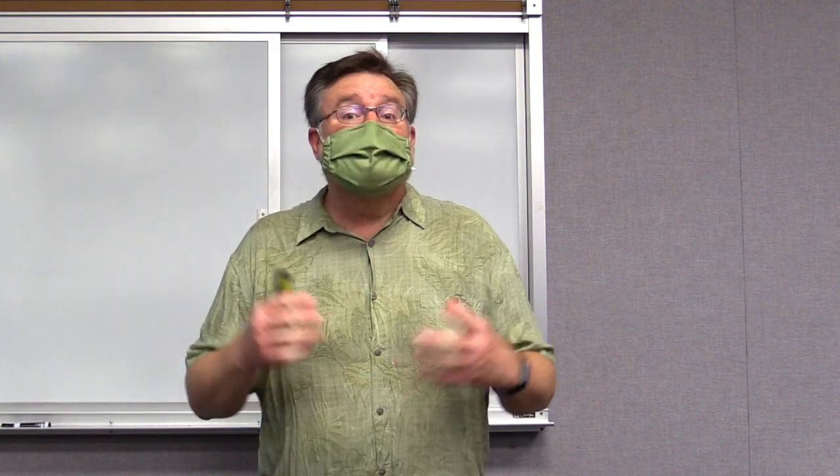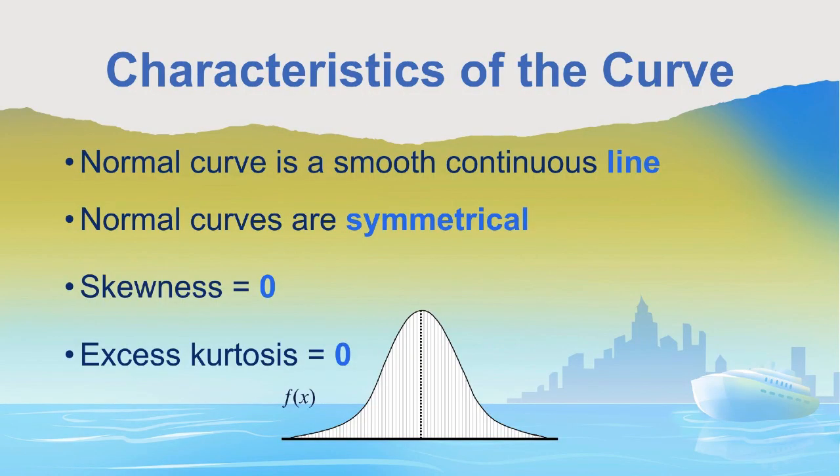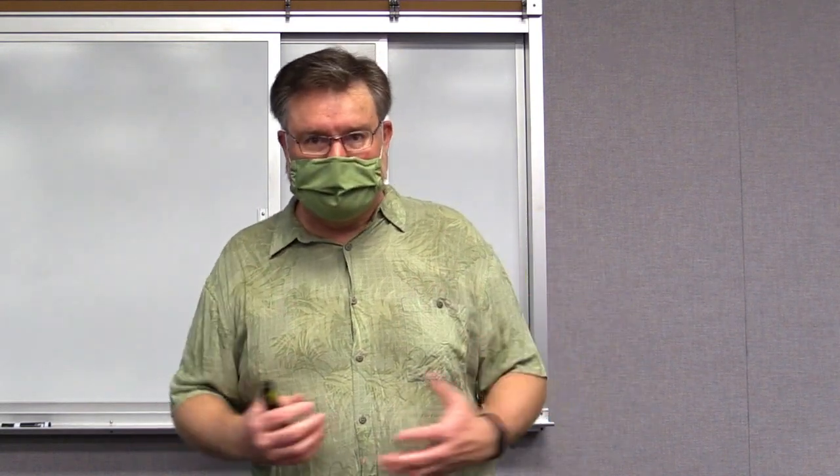Because this distribution is so important, we need to spend a little time understanding the characteristics of the normal curve. The first characteristic is that the normal curve is a smooth continuous line, and this is because it is a theoretical distribution. When we get raw data from the real world, they will be roughly normally distributed. The example we're using here is a perfect normal curve, hence that smooth continuous line.